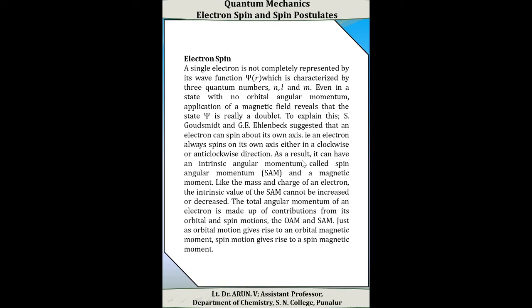Due to this spin motion, it can have an intrinsic angular momentum called spin angular momentum, and it is also associated with a magnetic moment. Like the mass and the charge of the electron, the spin angular momentum quantum number has a specific value that cannot be increased or decreased. The total angular momentum of an electron is made up of contributions from its orbital and spin motions. Just as orbital motion gives rise to orbital magnetic moment, the spin motion gives rise to spin magnetic moment.